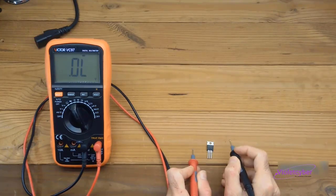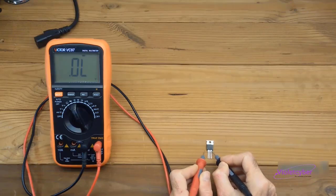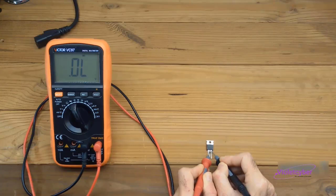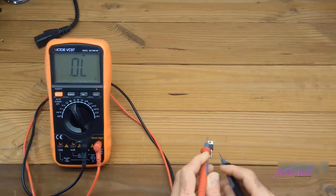First, I place the black probe on the source pin and the red probe on the drain pin. You'll notice that there is no reading on the multimeter and the multimeter doesn't beep. This means the pins are not shorted together.